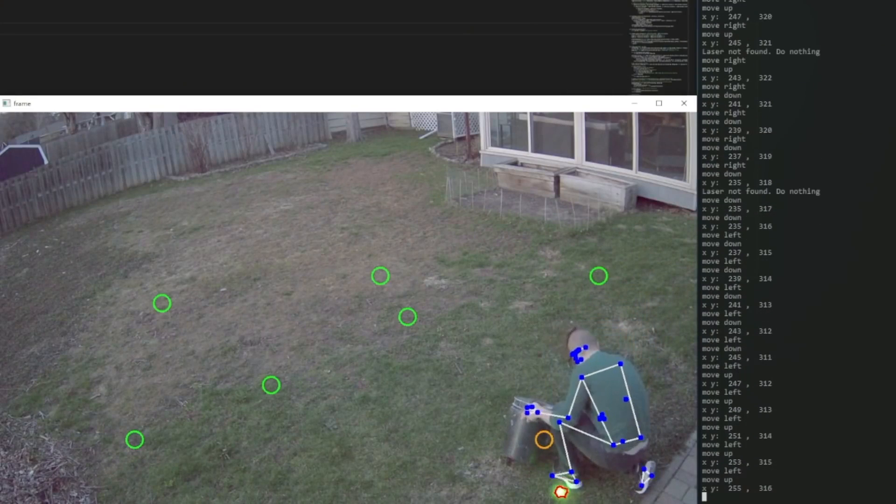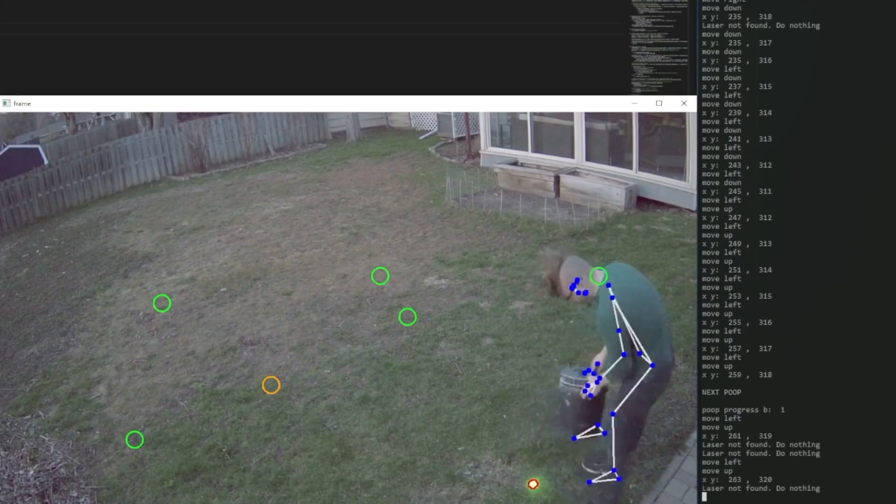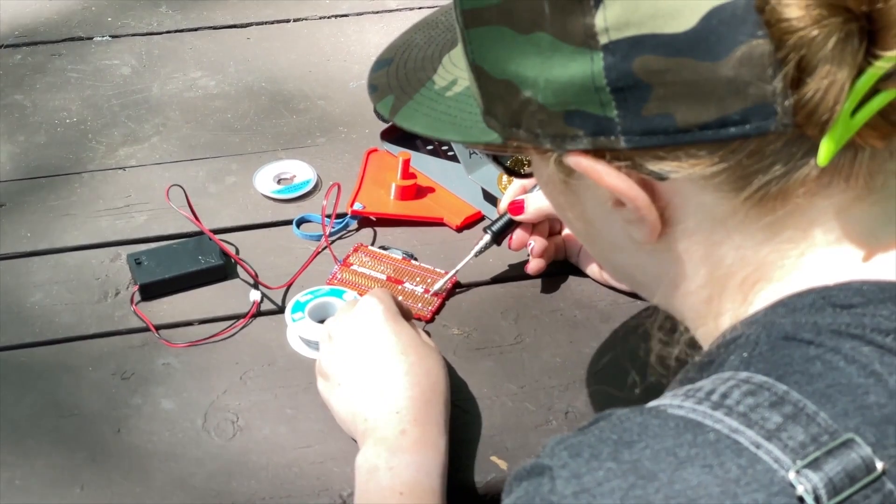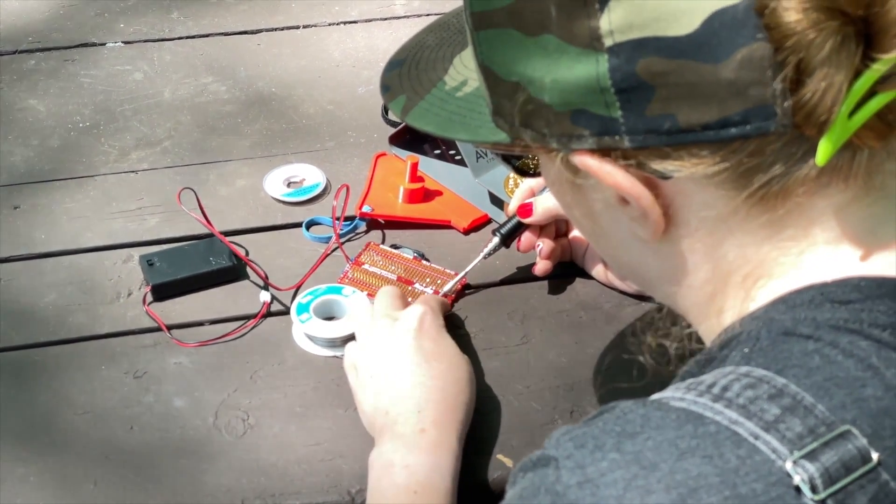This week on Maker Update, an AI targeting system for dog poop, watching YouTube on an antique, a spooky phone, and a portable soldering station. Hey everybody, I'm Donald Bell and welcome back to another Maker Update.